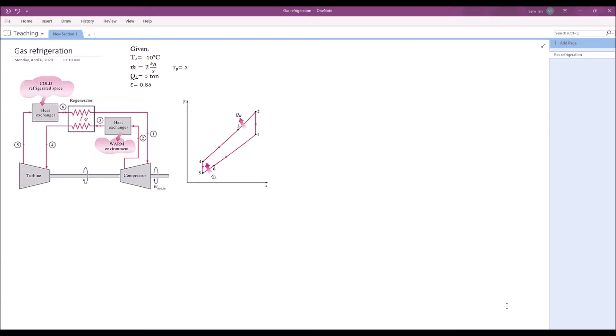So we want to design this cycle to give us 5 ton of refrigeration with a heat exchanger effectiveness of 85%. So step one is to find T4 from T5. The only temperature given to us is T5.